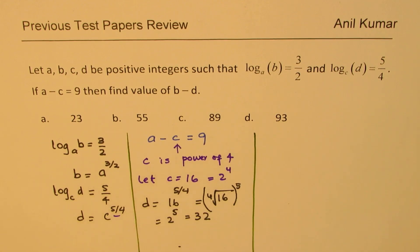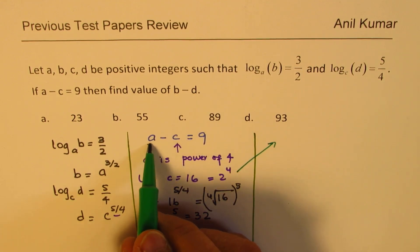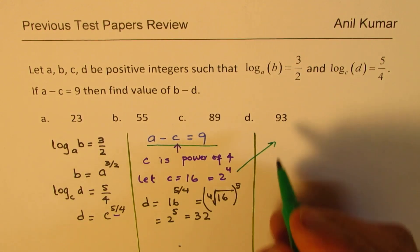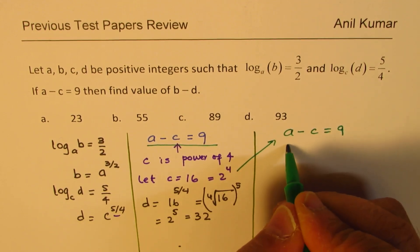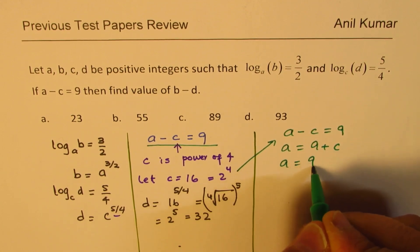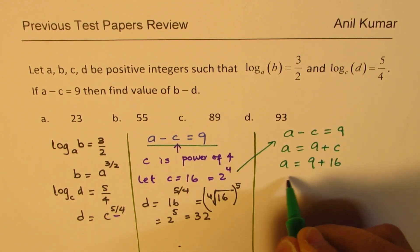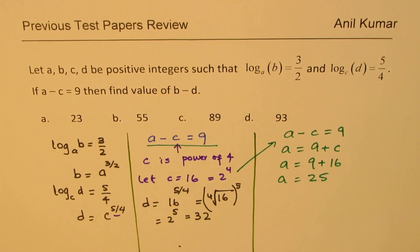Now when we had assumed C to be 16, in that case from this particular equation what is A equal to? Well A minus C equals 9. So A should equal 9 plus C. So A should equal 9 plus 16. So A is 25 for you.